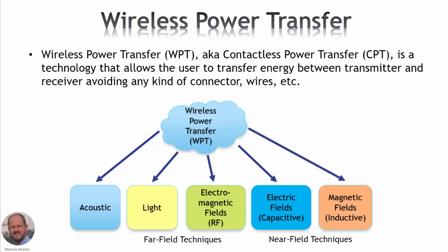Here in this slide we are showing a classification of the different technologies. We can have a first classification depending on the type of waves being used in the transmission of energy. We can use mechanical waves or electromagnetic waves. If we use mechanical waves, we have acoustic WPT. If we use electromagnetic fields, we can have light WPT, electromagnetic field-based WPT, or radiofrequency WPT, which are based on far-field transmission. We also have near-field techniques: based on electric fields, known as capacitive WPT, or using magnetic fields, known as inductive WPT.